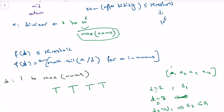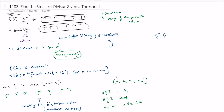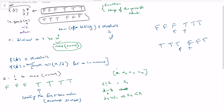So we might have false values first and then once we get true, we'll never get false again, because increasing the divisor only makes the sum smaller. In this problem, we want the smallest divisor, so since we go from 1 to max(nums), we are looking for the first true value. For binary search to work, the problem needs to be asking for either the first true value, the last false value, the first false value, or the last true value.